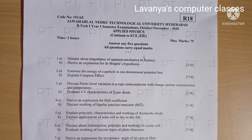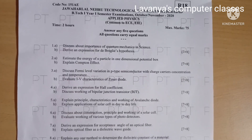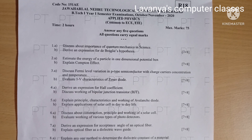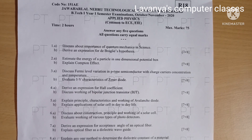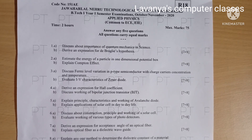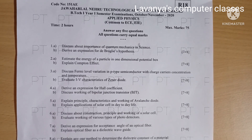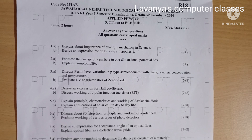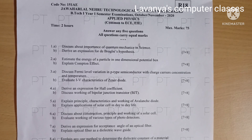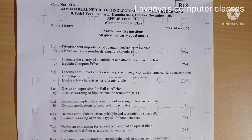Question 6a: Discuss the construction, principle, and working of a solar cell, for 7 marks. Question 6b: Evaluate the working of various types of photodetectors, for 8 marks.